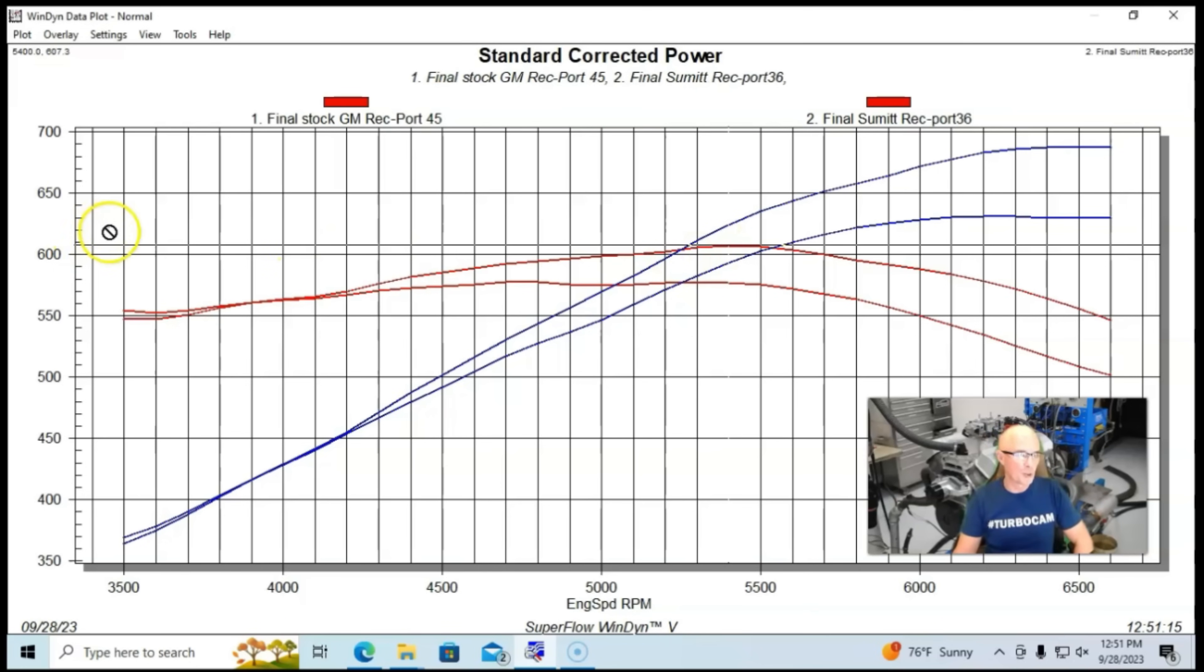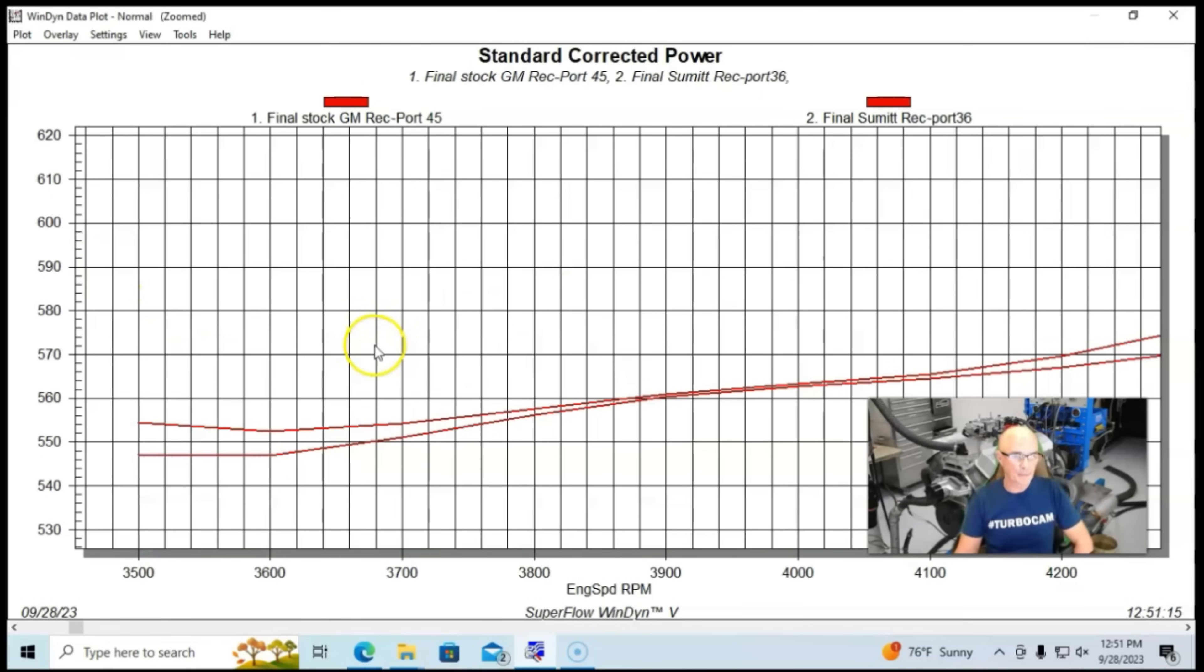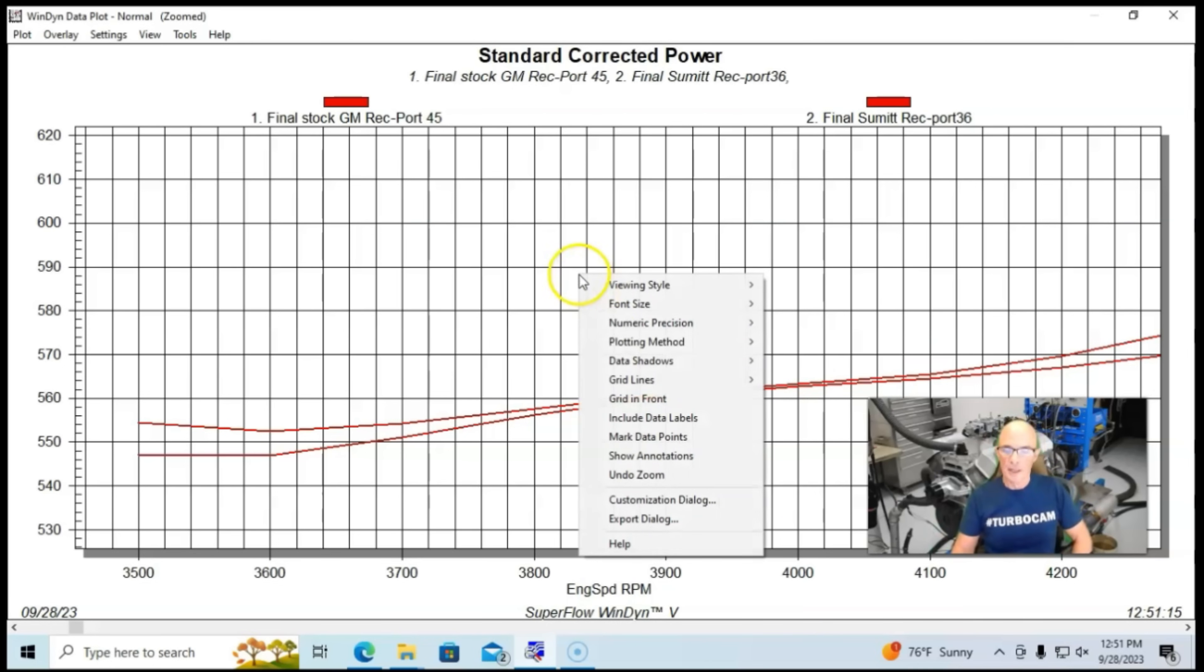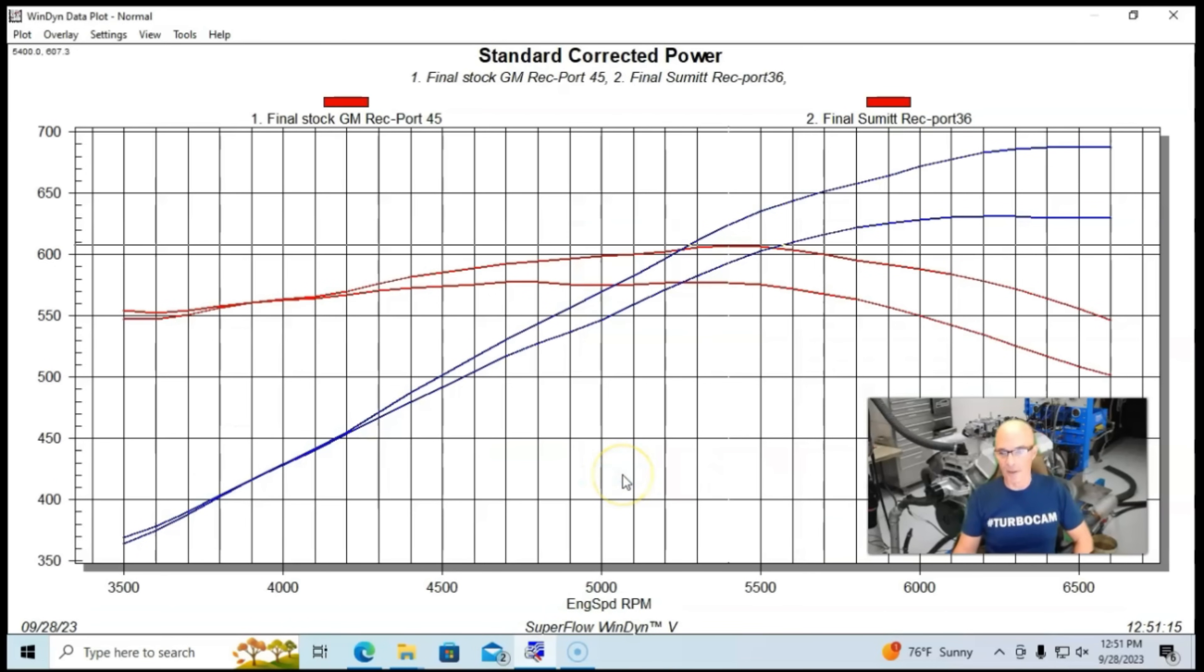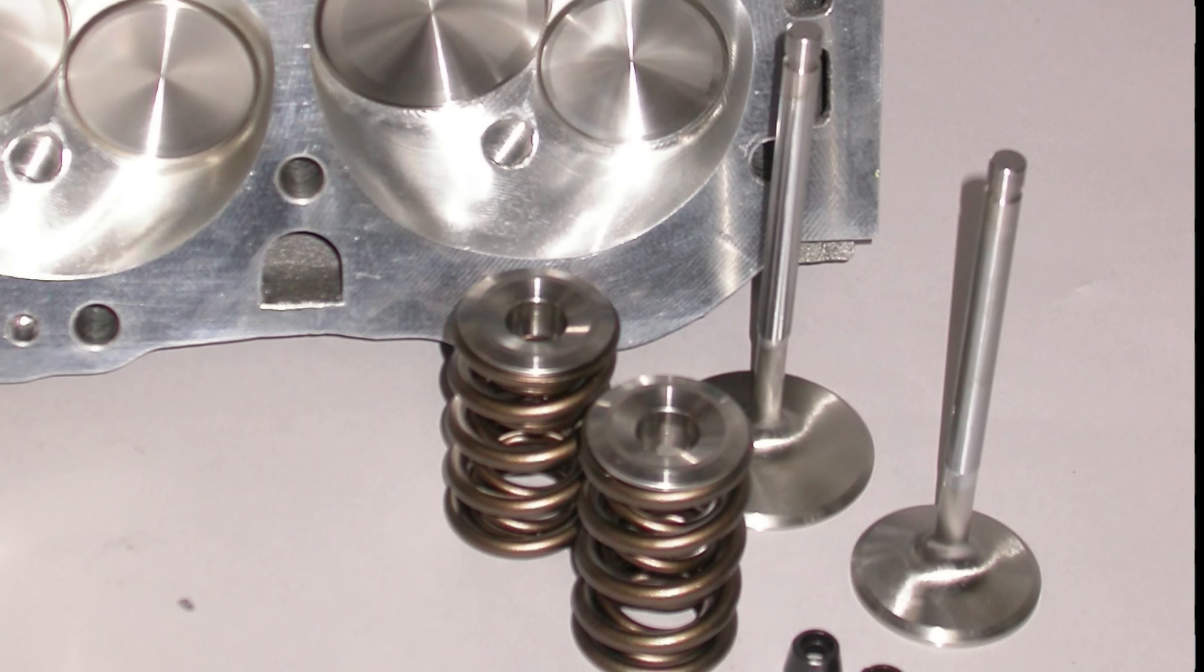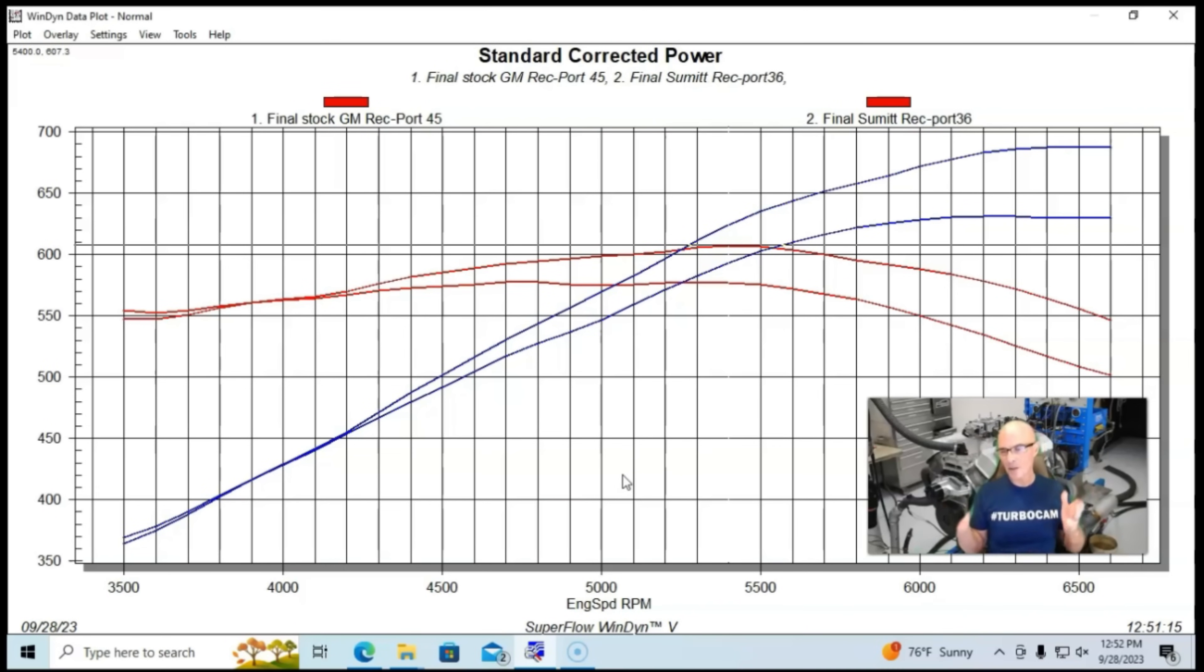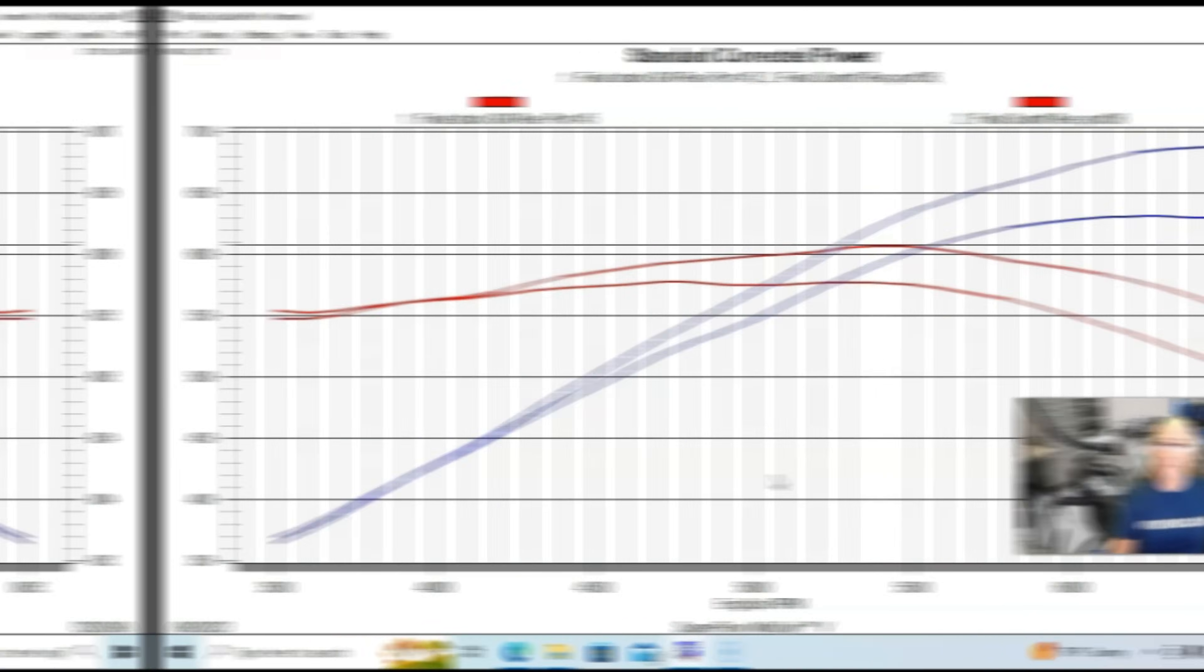You can see they basically gained power from about 4,000 RPM on out because below that level, the factory iron head could support that power level. I was thinking that there might have been a crossover there, a little bit of a loss, but actually, the Summit heads were better basically all the way through. They're the same in the 3,900 to 4,100 RPM range, but everywhere else, the better head obviously helped the motor make better power.